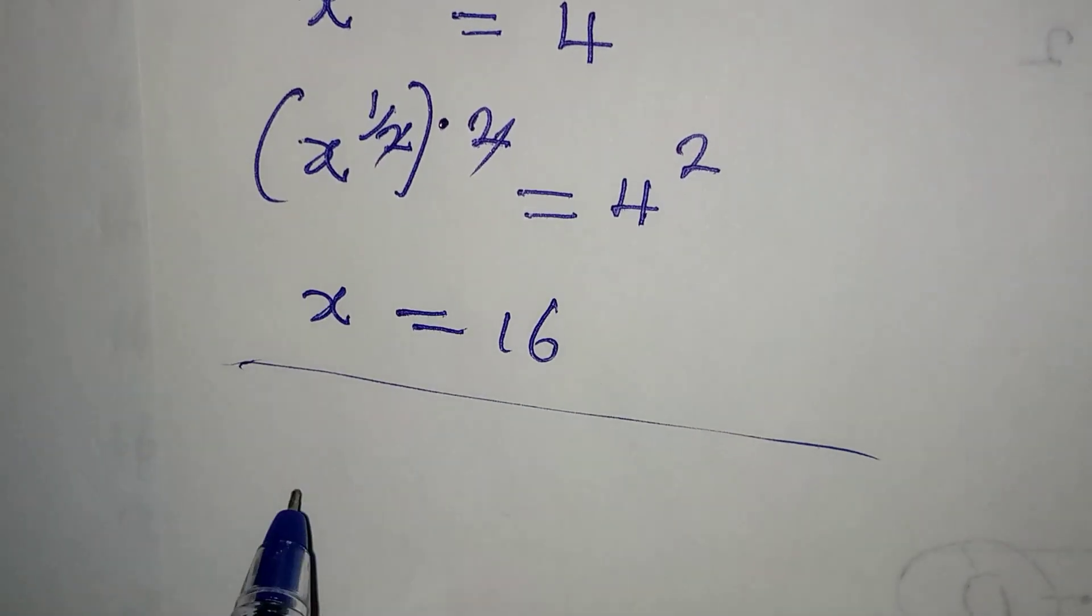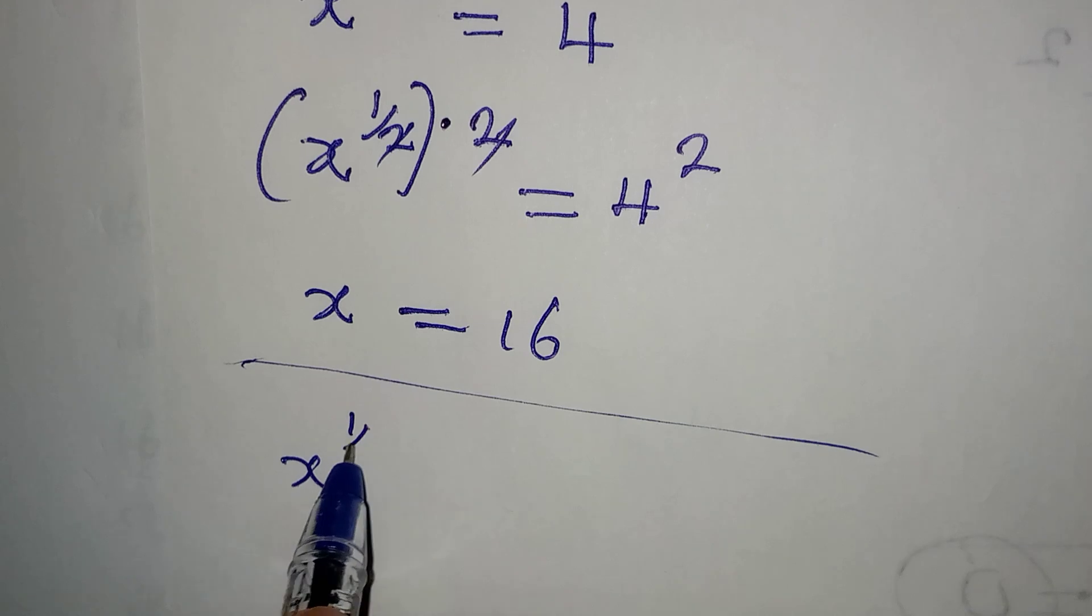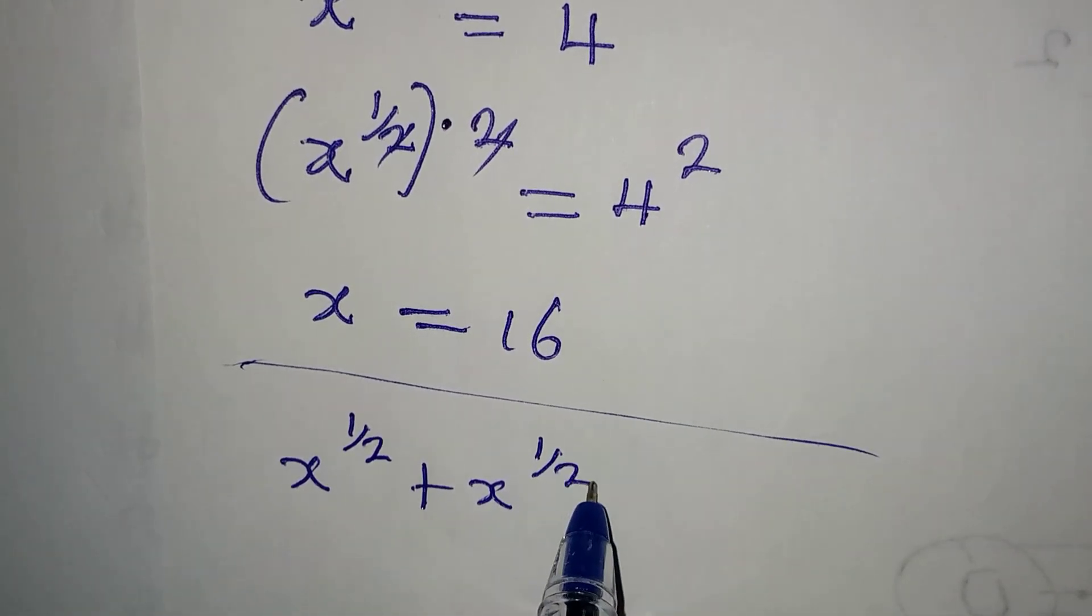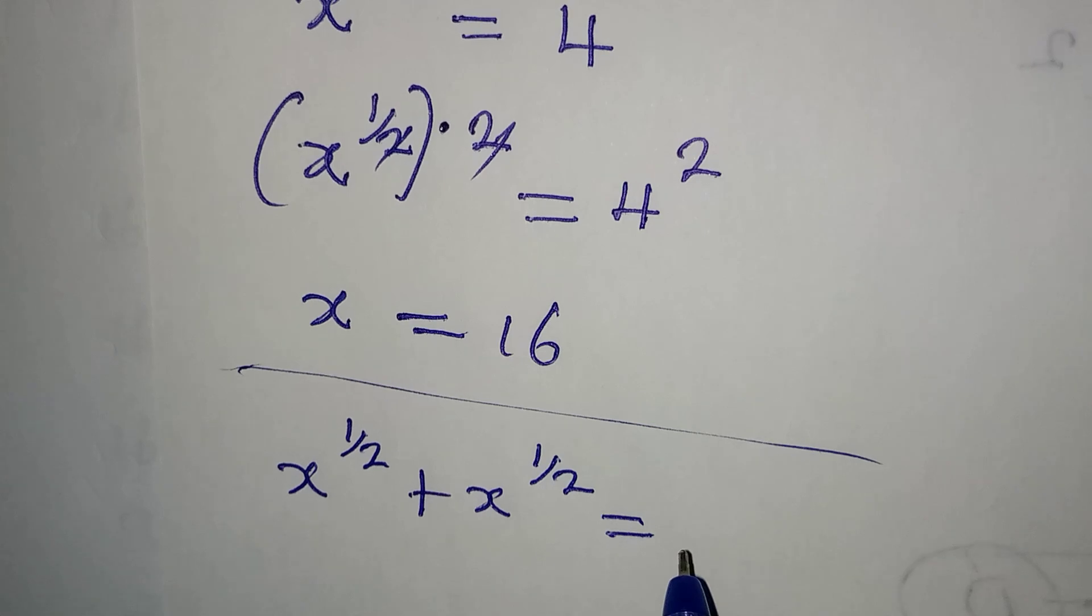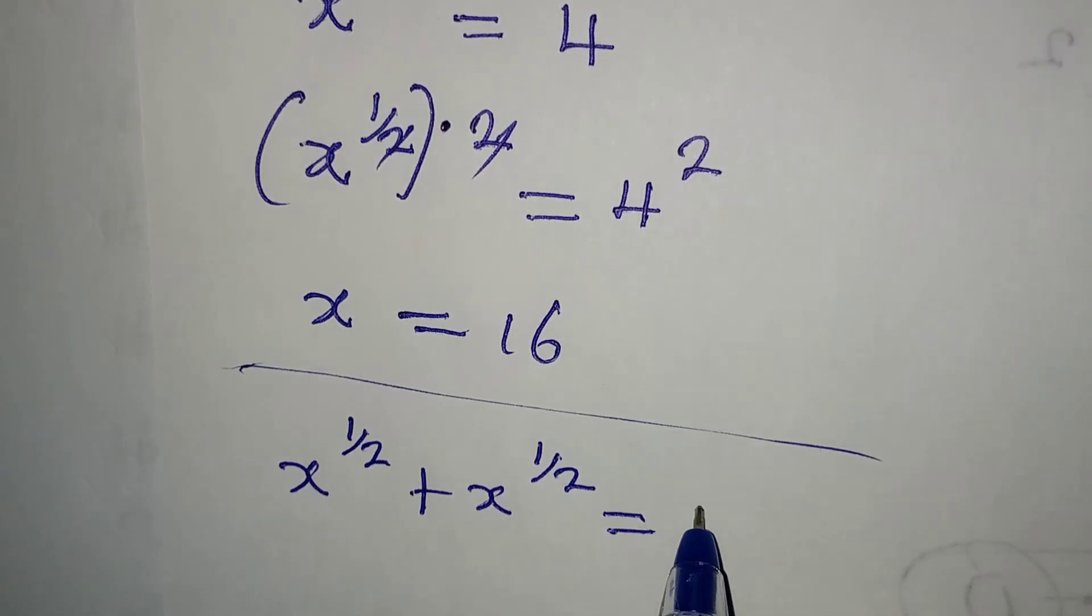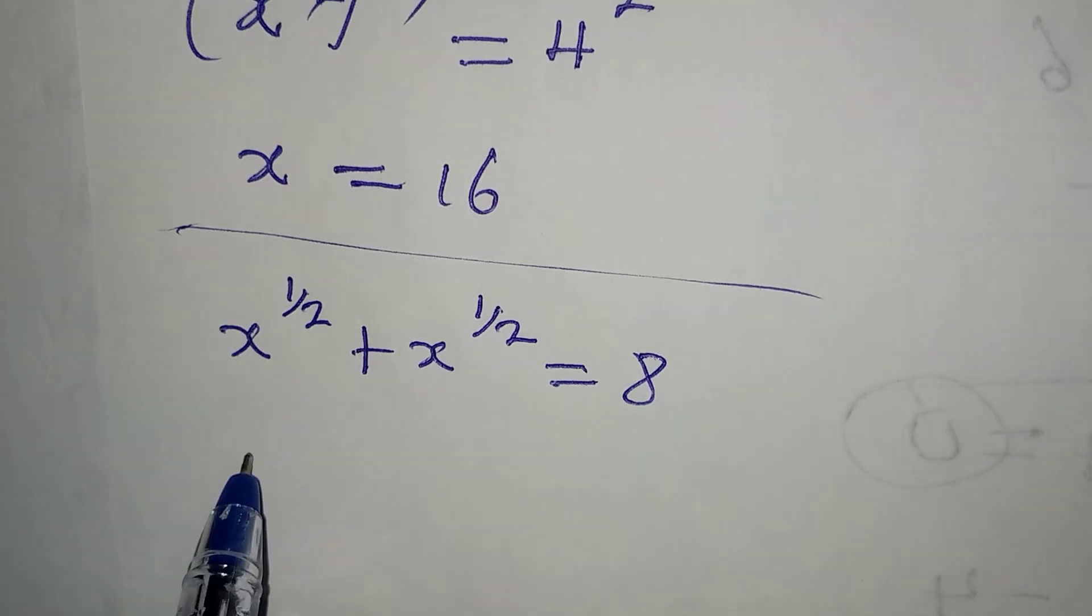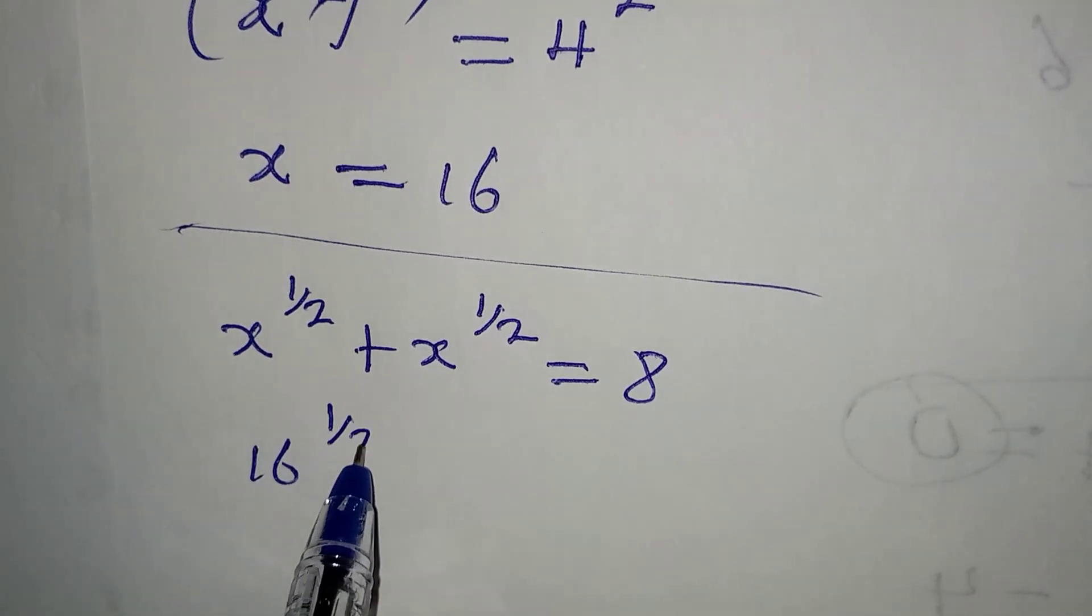Remember we had x to the power of 1 over 2 plus x to the power of 1 over 2 equal to 8. So we have 8 over here. Now our x is 16, so we have 16 to the power of 1 over 2.